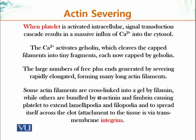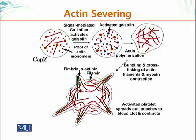Some of these actin filaments are cross-linked into a film by filamin, and others are bundled by alpha-actinin. These shorter actin filaments also polymerize and form longer filaments, which can then be bundled by bundling proteins forming gels, as well as lamellipodia and filopodia. These structures spread across the clot and attach to the damaged tissue via integrin proteins that can bind different molecules.